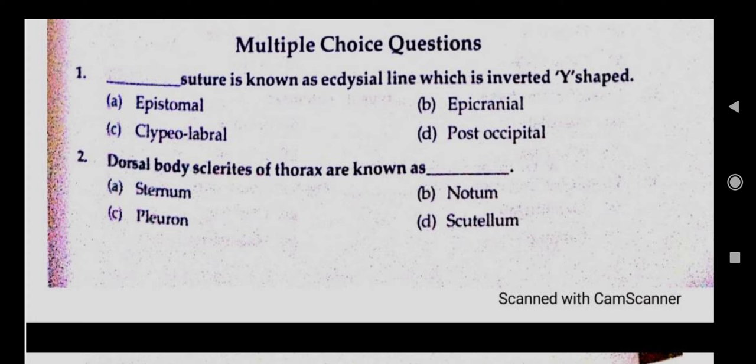Multiple choice questions of entomology. Question number one: dash suture is known as the ecticell line, which is inverted vice-shaped. Answer is B, epikranial. Question number two: dorsal body sclerite of thorax are known as the answer is B, notum.